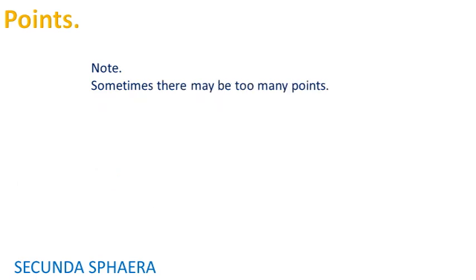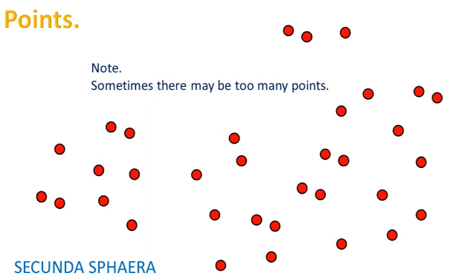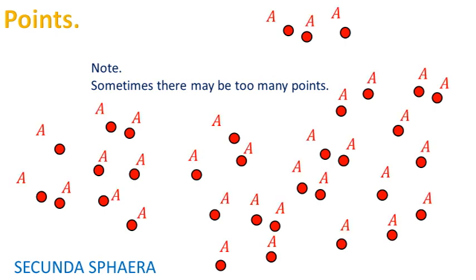In some cases, there may be many points to denote and there may not be enough letters, or using too many different letters make the discussion harder. Hence, the same letter may be used for different points while adding subscripts or apostrophes.